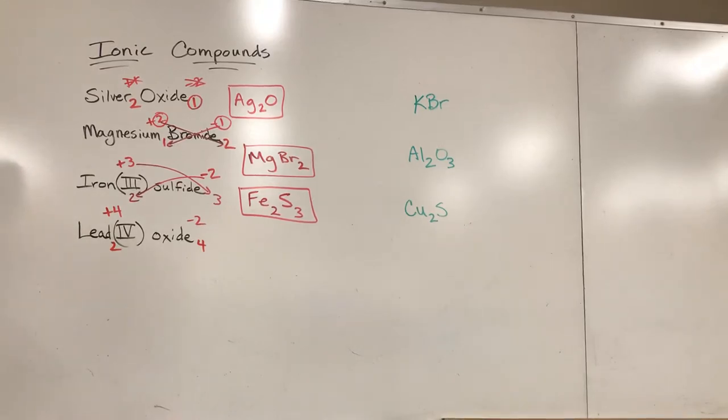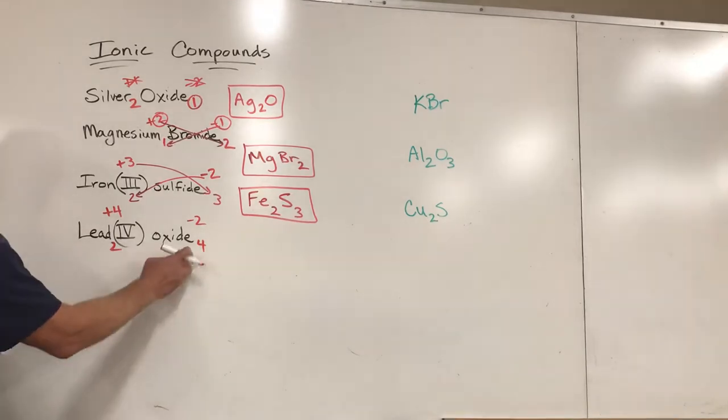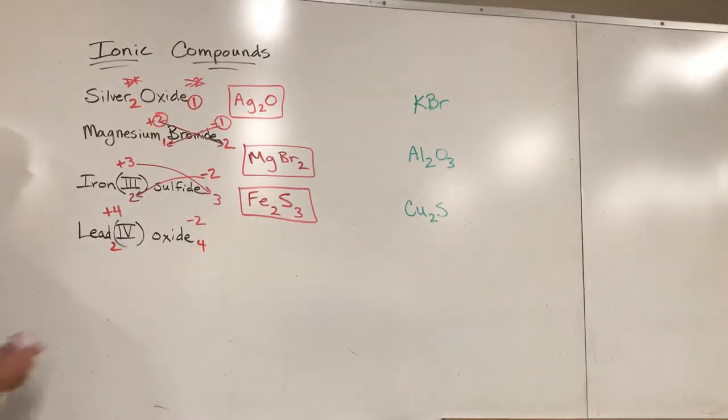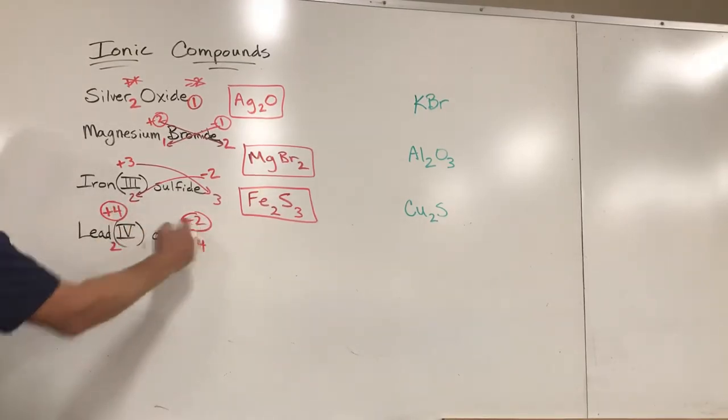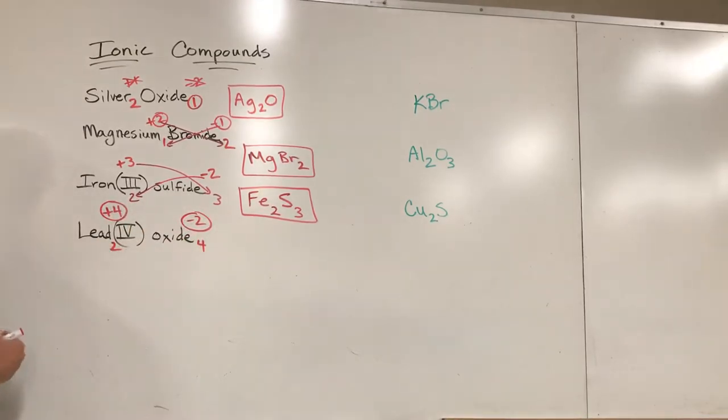But this one happens to be a rare situation where these numbers reduce, and that's not the smallest whole number combination that will make zero. Two leads and four oxygens will definitely make zero, but what if I just had one of these and two of those? That'd be positive four and negative four. See how two goes into four twice? This actually reduces to one lead and two oxygens.